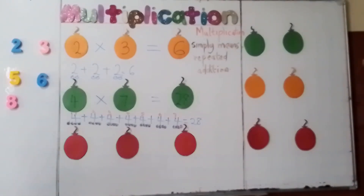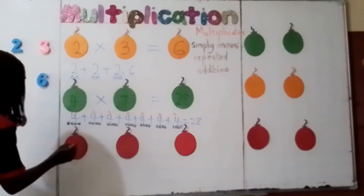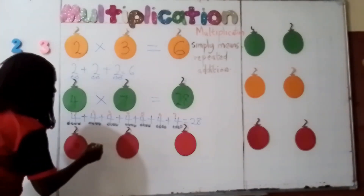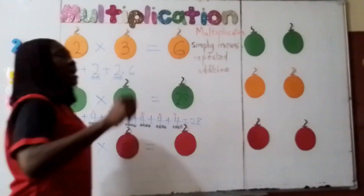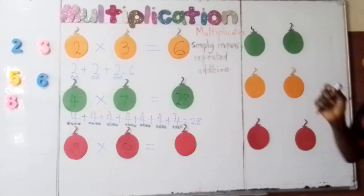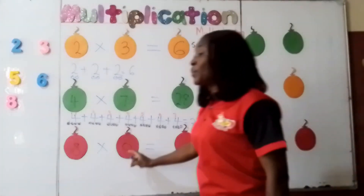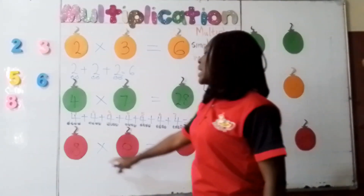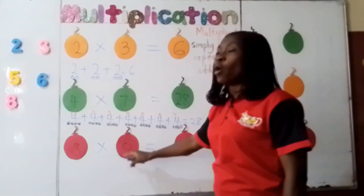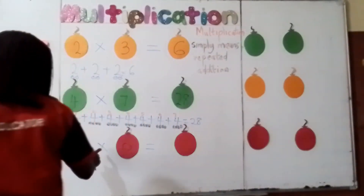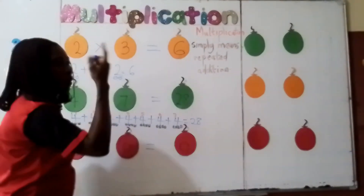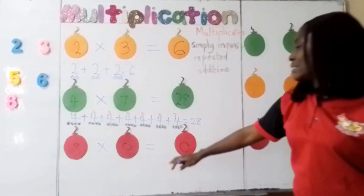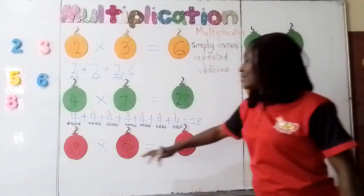Now we want to try another one. What if we are given 8 times 0? Remember in addition and subtraction we have rules. In multiplication there are also rules. For example, any number multiplied by 0 is 0. So 8 times 0 is equal to 0. It means 8 in no place, so my answer is 0.